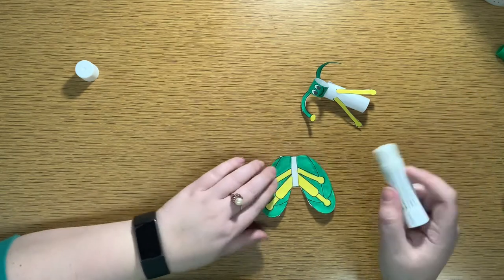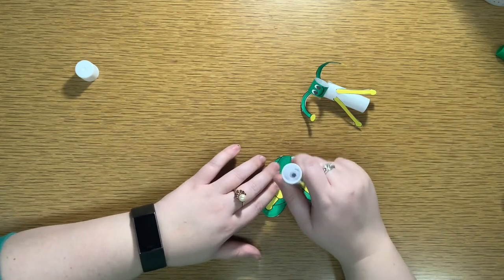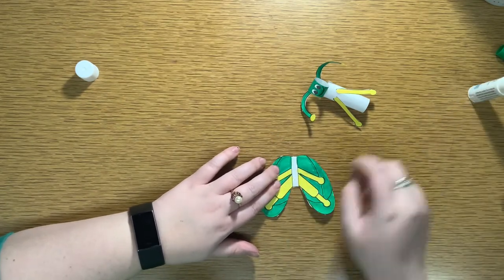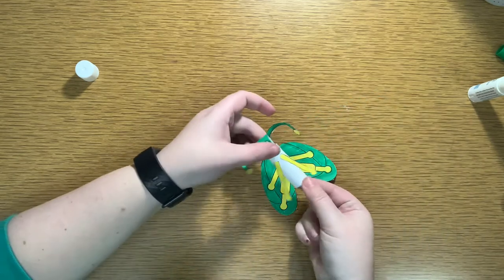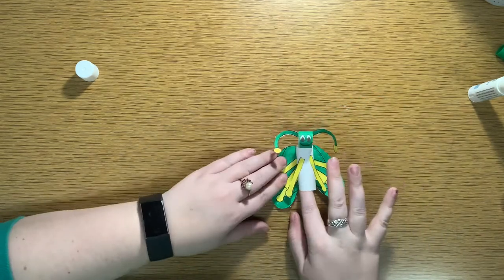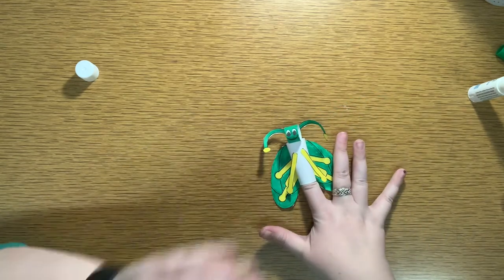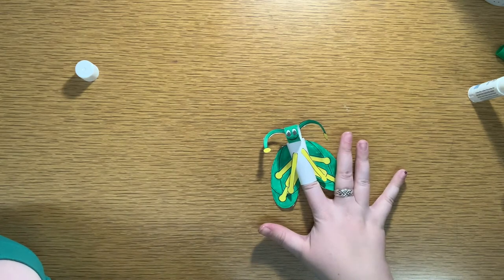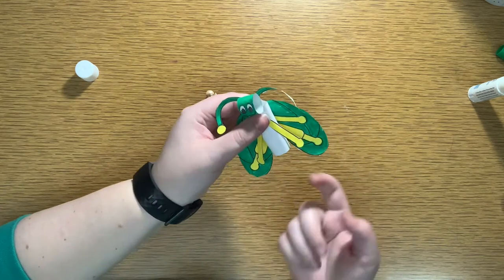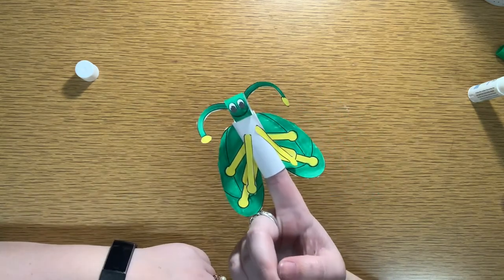And last we have the wings. I'm going to put a little bit of glue down the center of the side that I colored where that box is, and then I'm going to set my whole puppet on there and hold it with my finger for 5 seconds. And there you have it, one grasshopper finger puppet.